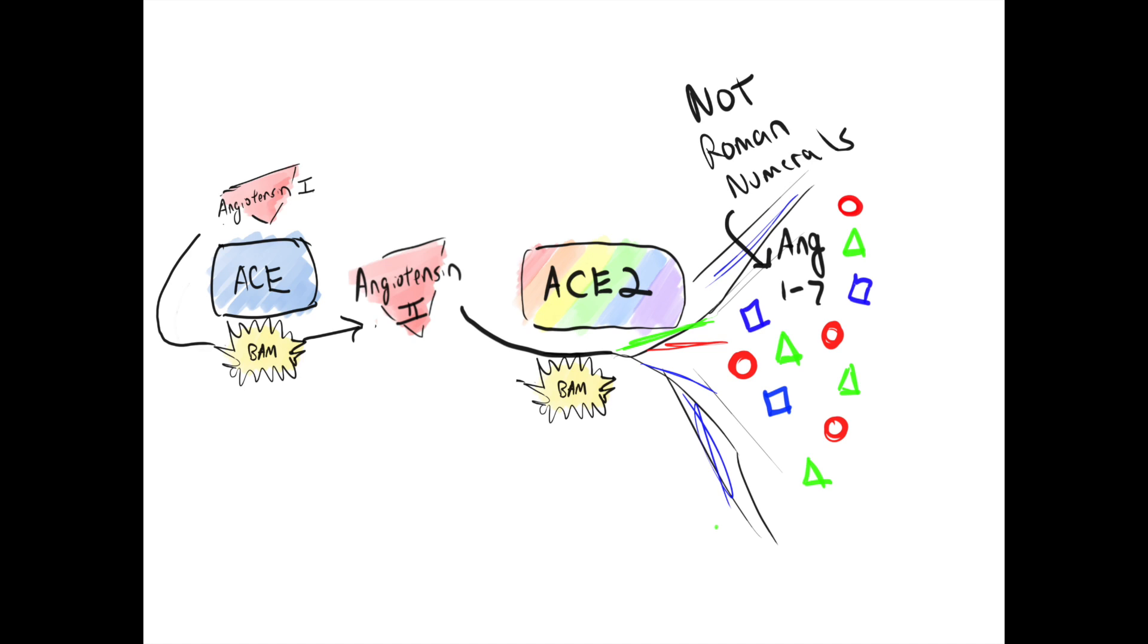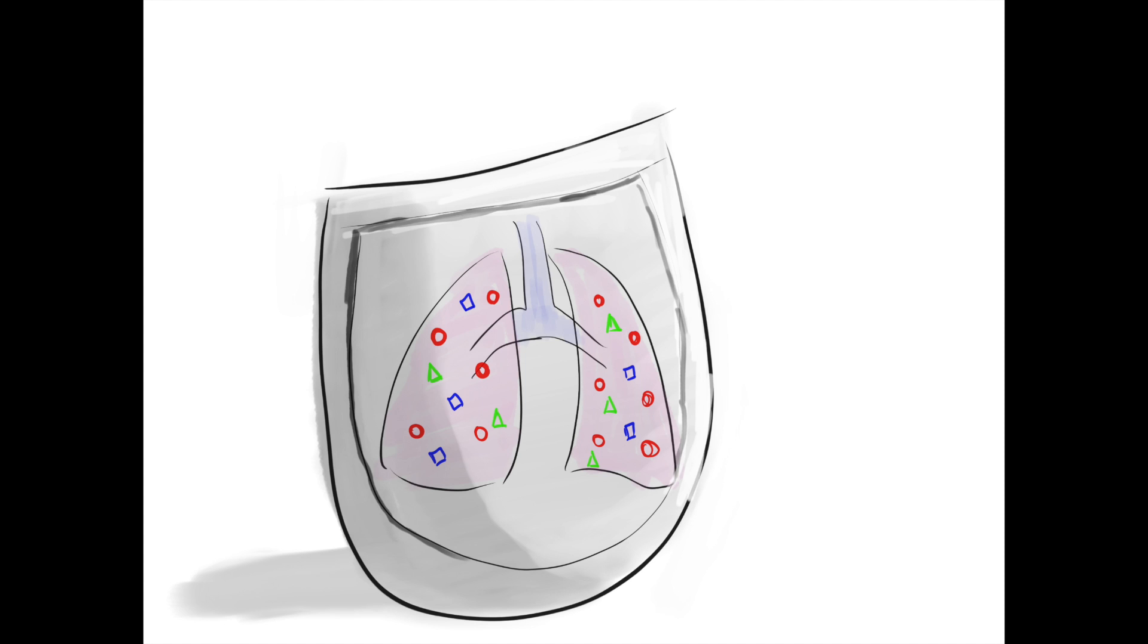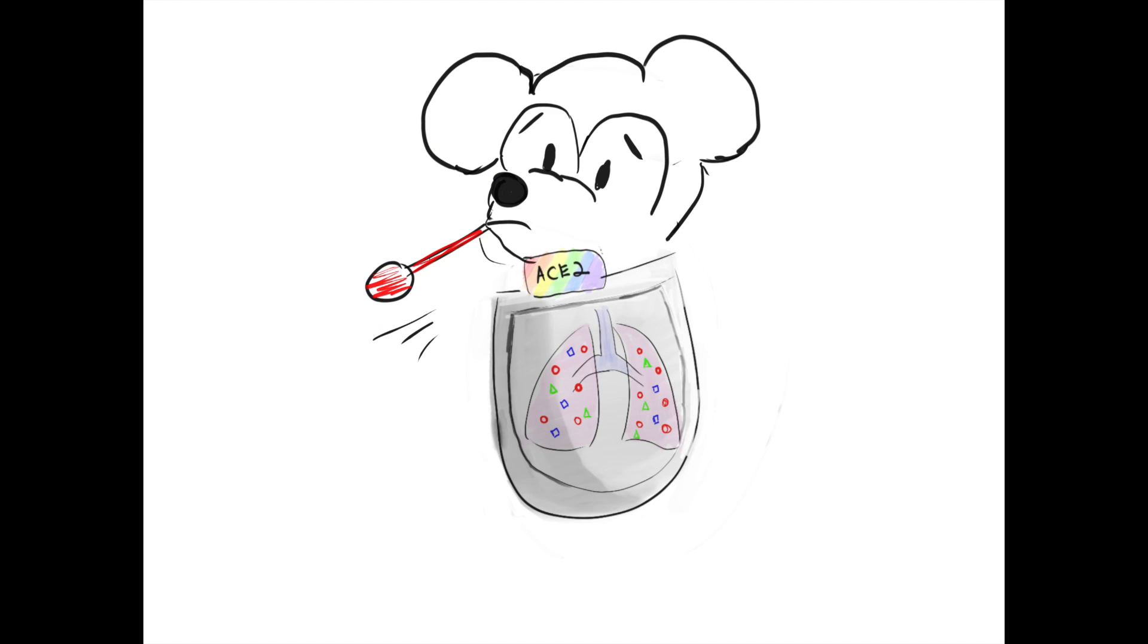In contrast to angiotensin 2, all six of these breakdown molecules are vasodilatory. And so it's thought that in many cases, angiotensin 1 through 7 are relatively lung protective. And therefore, ACE2 is thought to be lung protective. This has been seen in mouse models of viral pneumonias.